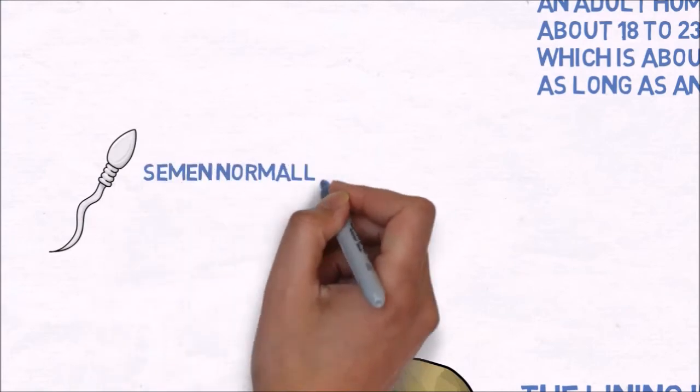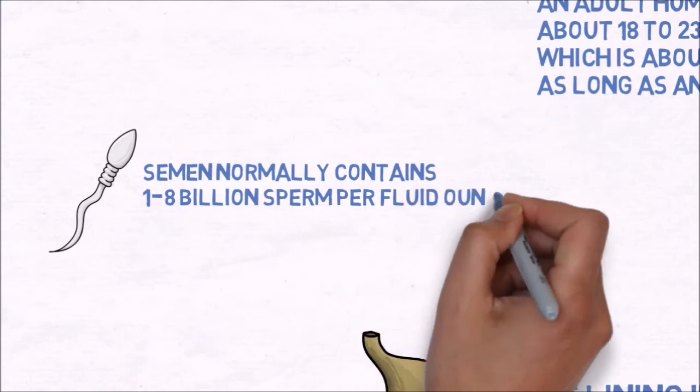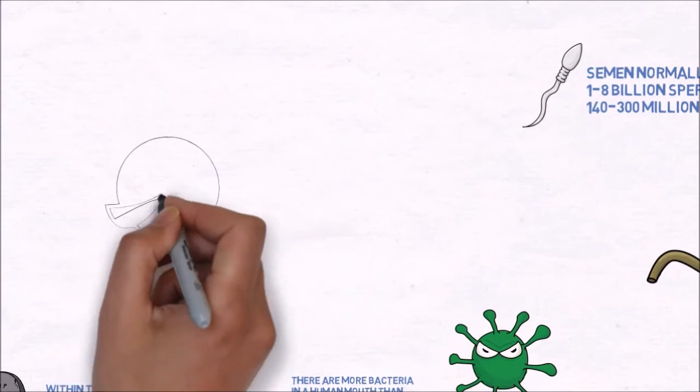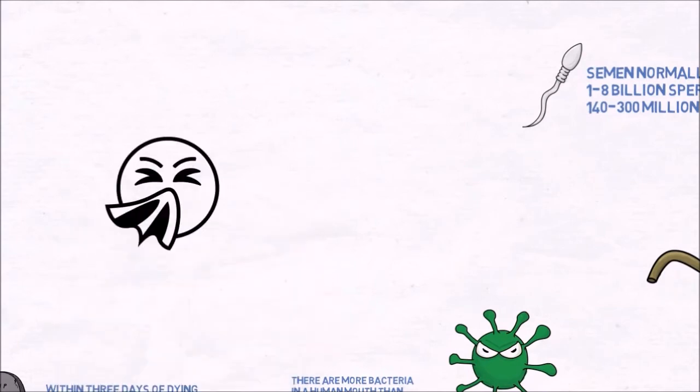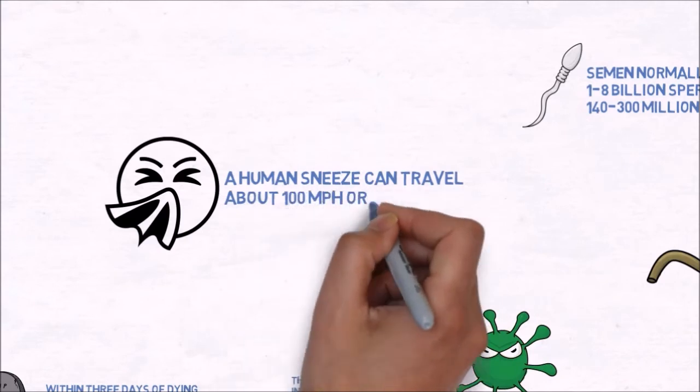Semen normally contains 1 to 8 billion sperm per fluid ounce, 140,300 million sperm per milliliter. A human sneeze can travel about 100 miles per hour or more.